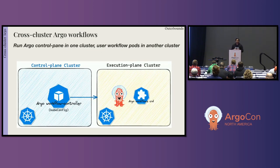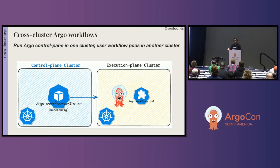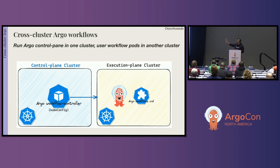Why would you want this? Imagine you have an execution plane cluster. A lot of data science teams have their own Kubernetes clusters with access to special hardware like GPUs, or access to special data for machine learning models. They only want to run workflows dealing with data science there — anything else running in that cluster is overhead. So they want only workflows in this execution plane cluster. In that case you can have a separate control plane Kubernetes cluster that only runs your Argo workflows controller. And this is actually possible today because Kubernetes has always had the notion of a kubeconfig.